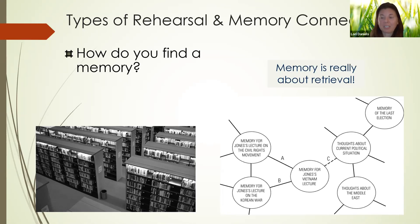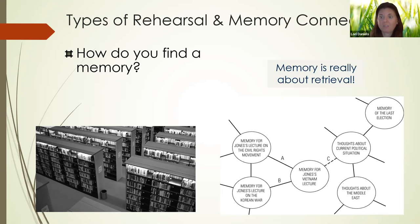Now we're going to talk about how your brain knows what to connect with what. Part of it is that we're telling our brain what to connect — when I think about this, I also think about that, and by doing that I'm linking them together. So we're directing and organizing our own memories, just like kind of putting them in the card catalog.